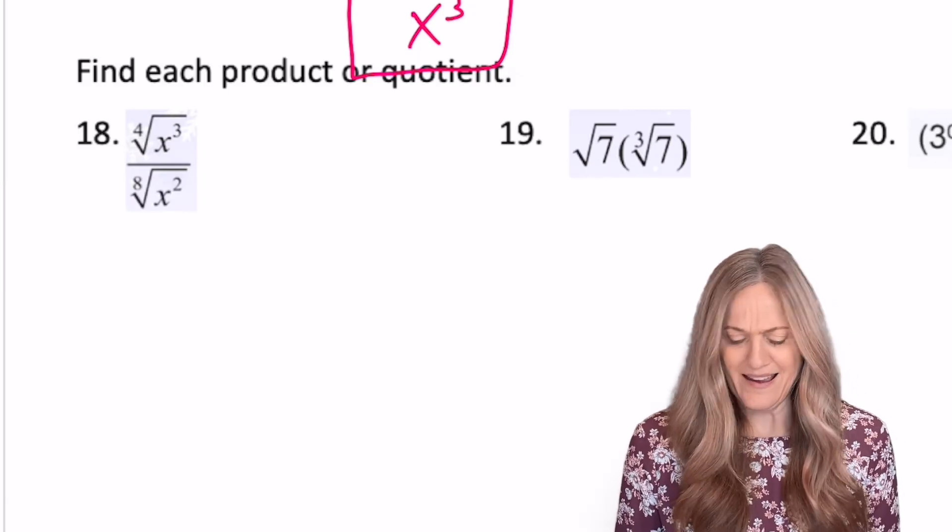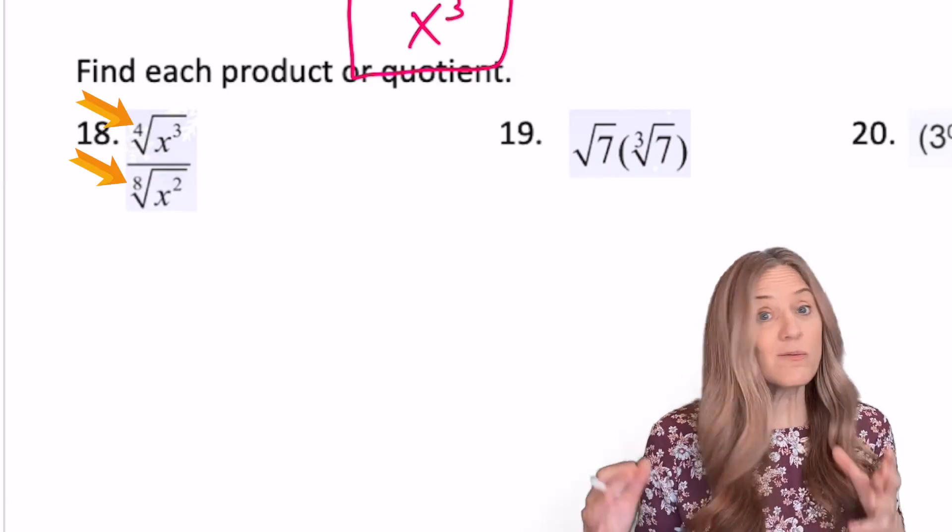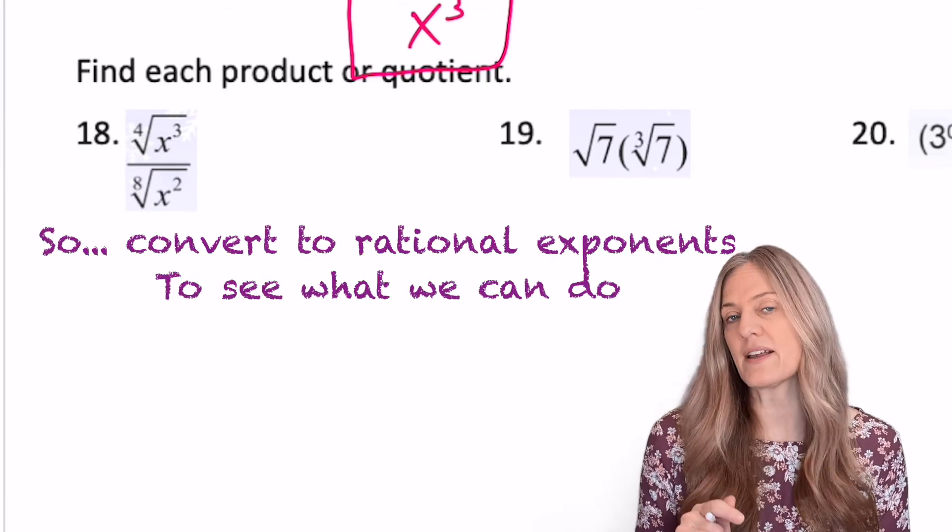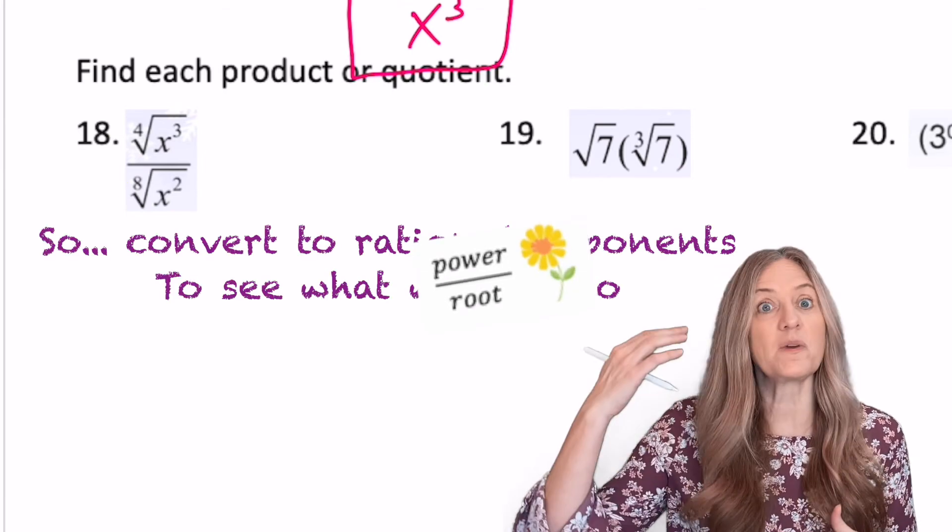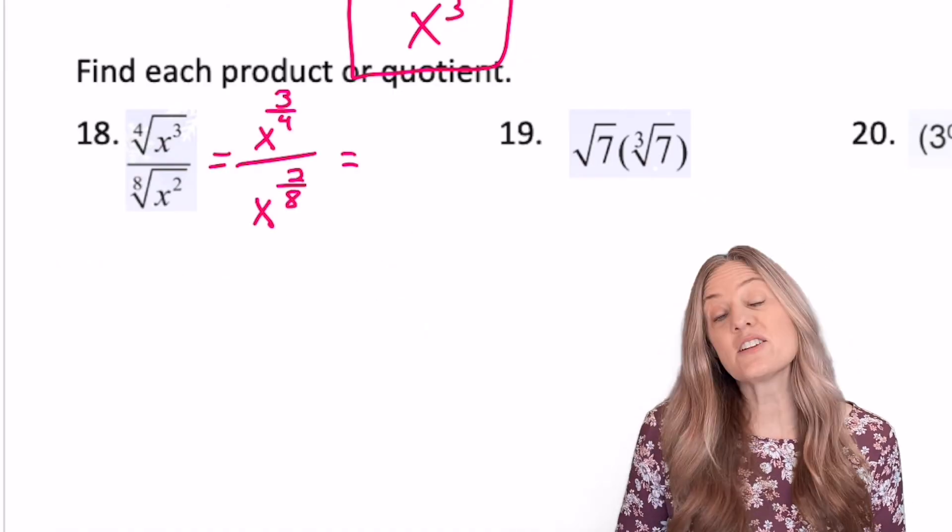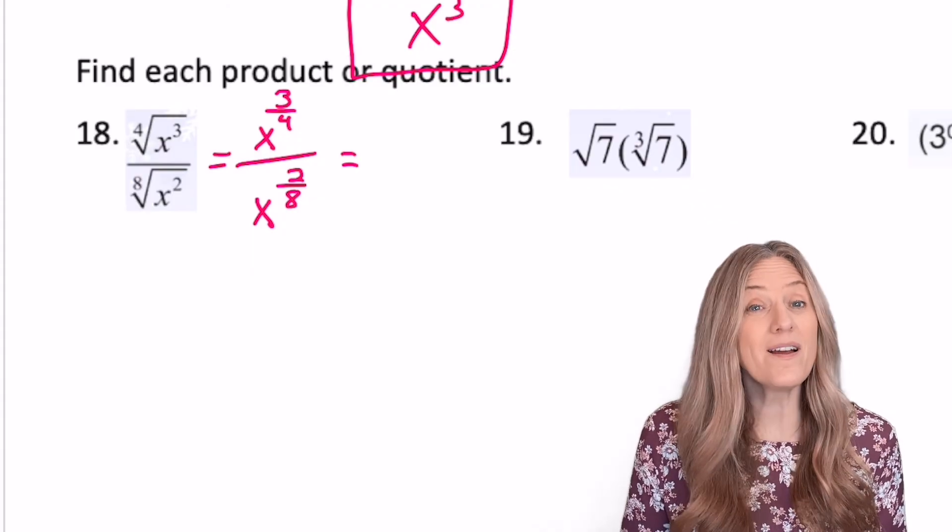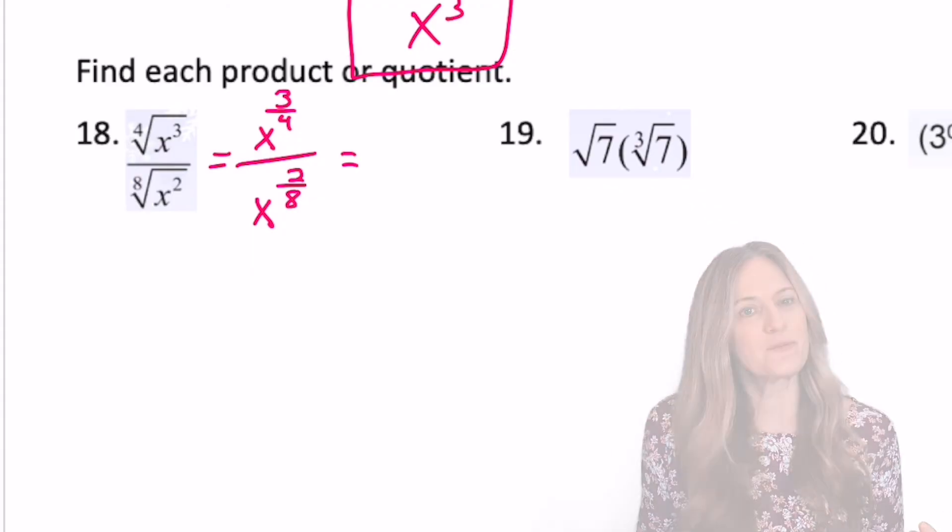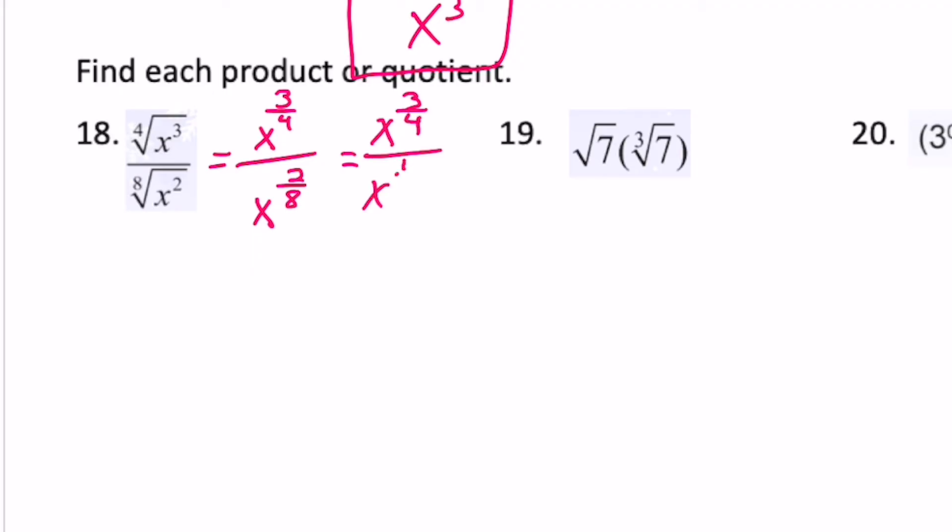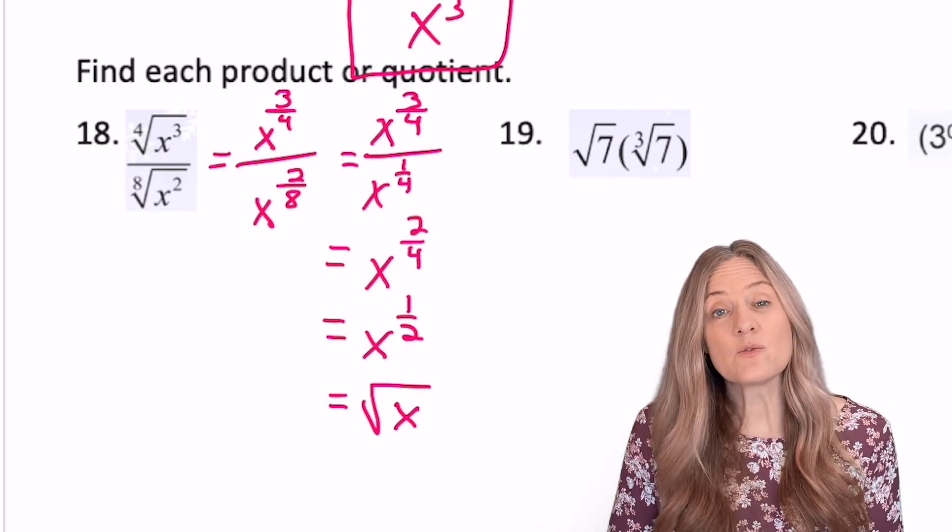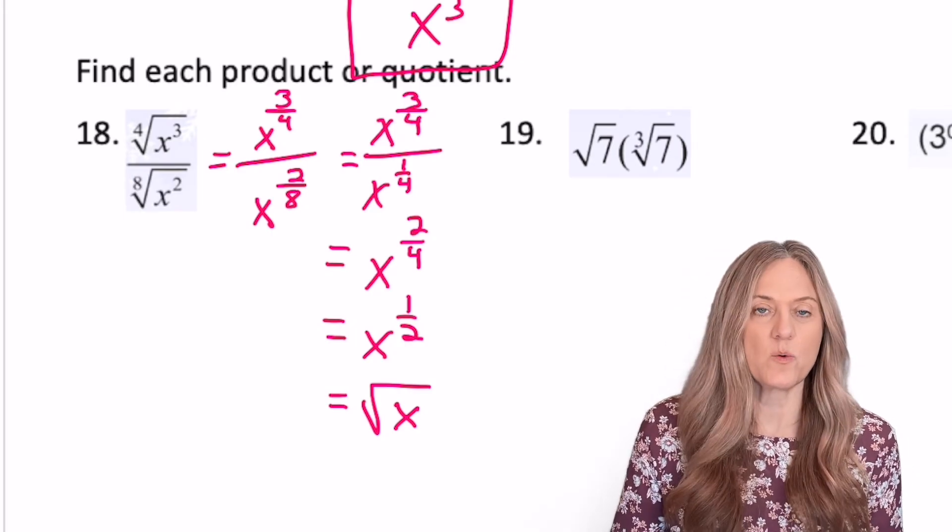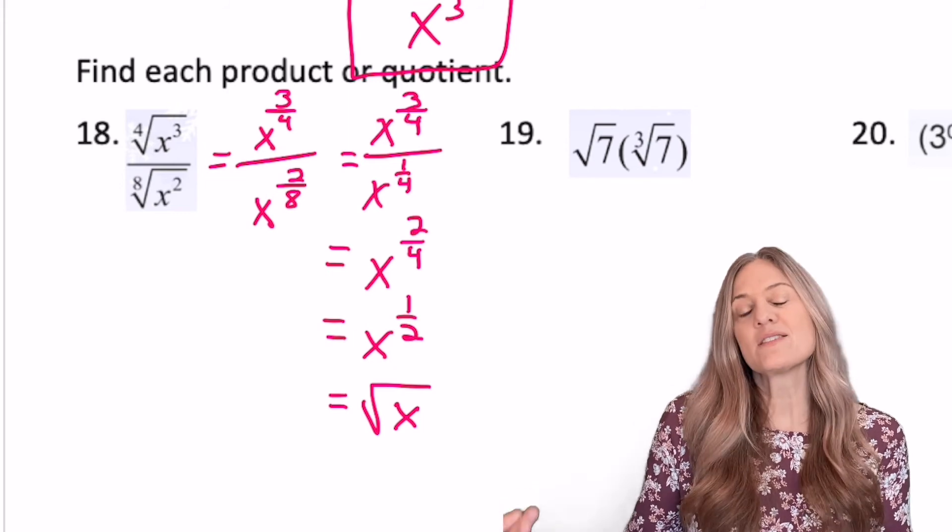Looking at 18, oh my, the indexes aren't the same, so I can't rewrite it as a single fraction. So let's go ahead and go to rational exponent. Rational exponent, remember that just means we have a fraction for an exponent. x to the 3/4ths divided by x to the 2/8ths. Really nice that 2/8ths reduces to 1/4th, so then I can just subtract my exponents. x to the 3/4ths minus 1/4ths is x to the 2/4ths. 2/4ths reduces to 1/2. x to the 1/2 is the square root of x.